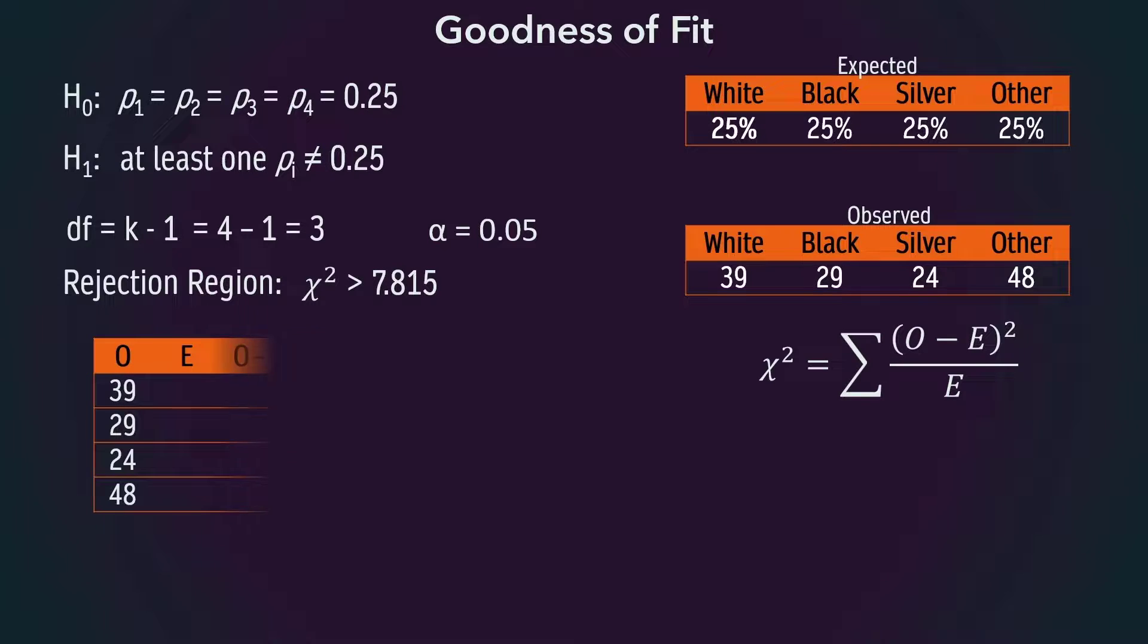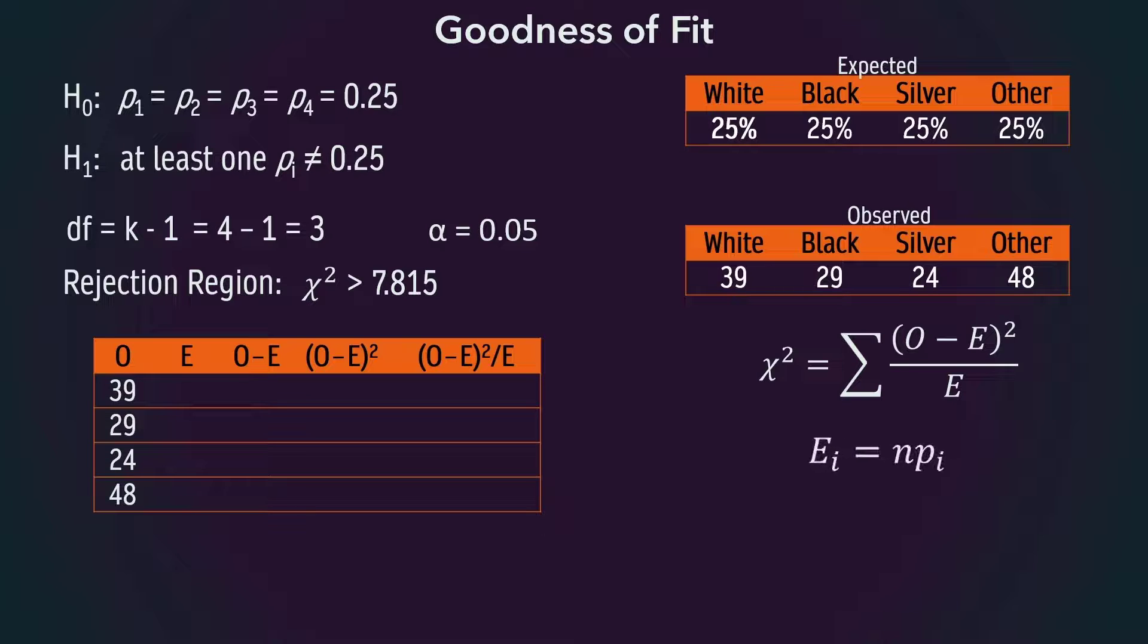In calculating the test statistic, expected values can be obtained by n times pi as before, or we can simply divide the sample size 140 by the number of categories 4 to obtain 35 for each of the expected cells.